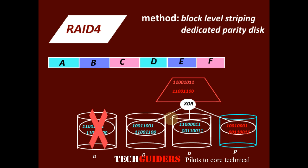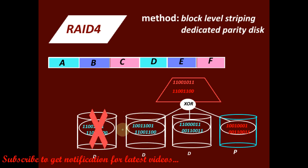And the minimum number of disks required for RAID 4 setup is 3: minimum 2 disks for striping and 1 for a dedicated parity disk.